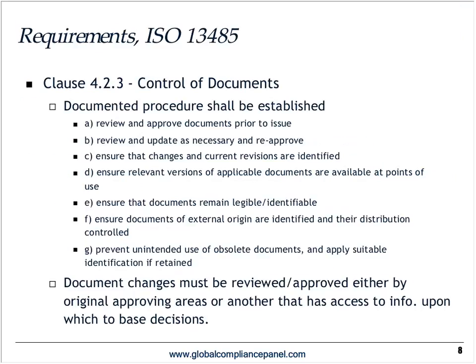When it comes to ISO 13485, the document control requirements in sections A through G closely mirror the FDA requirements: review and approve documents, update as necessary, ensure current revisions are identified, ensure relevant versions are available, documents are legible and identifiable, obsolete documents are prevented from unintended use, and changes are reviewed by original approving areas.